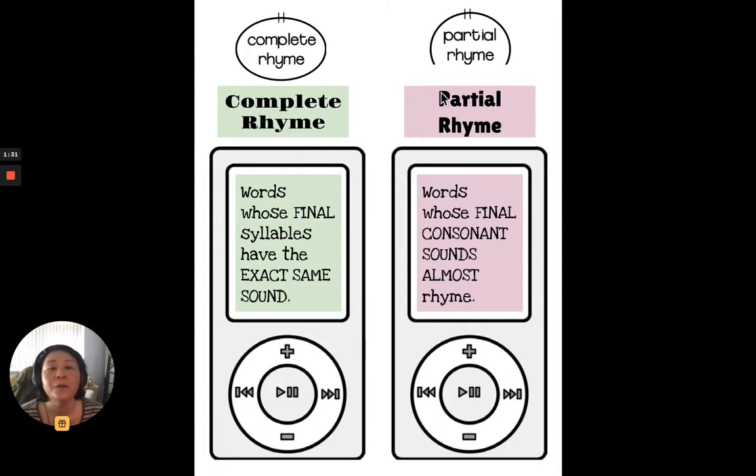A partial rhyme, when we are writing on a poem, you would show a partial rhyme by doing this partial circle and the two lines. And partial means part. So in a partial rhyme, words whose final consonant sounds almost rhyme, they don't have the exact same sound. They almost rhyme. So we're going to go on to some examples.